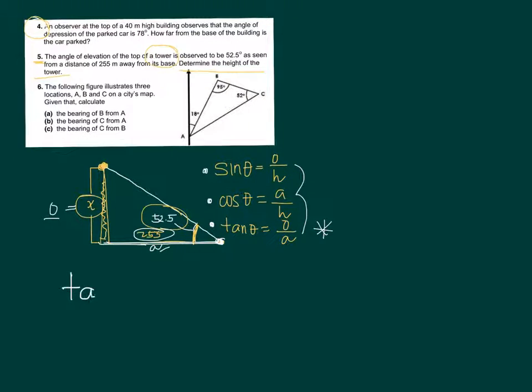Tangent of theta - your theta is the angle, so tangent of 52.5 degrees equals the opposite, which is X, over the adjacent, which is 255.